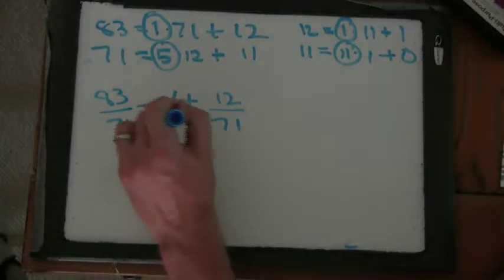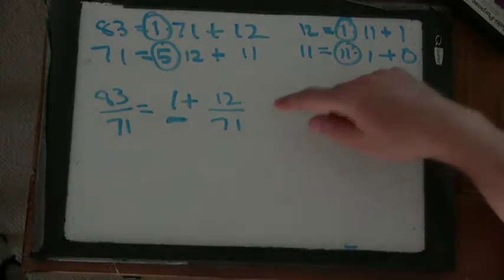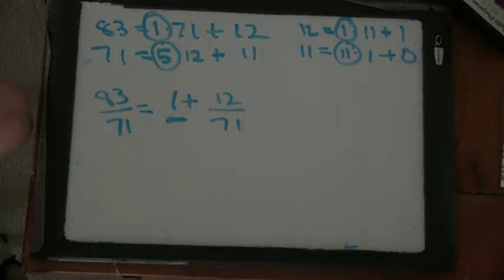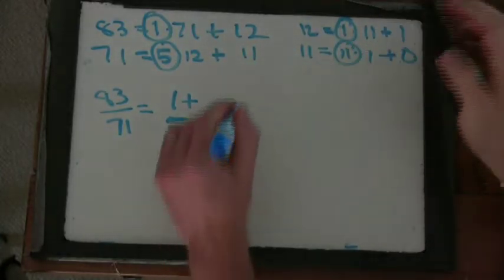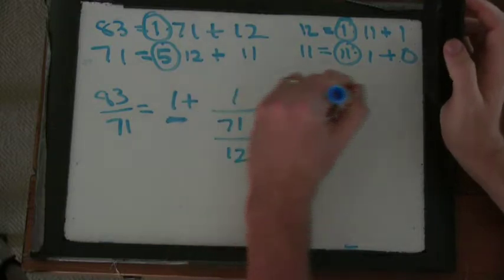So I split it. I split off the integer part. You can flip it up. So what is this? What happens now? 71 over 12. So I do 1 over 71 over 12.